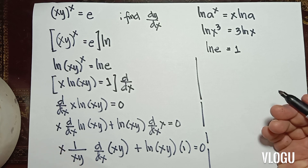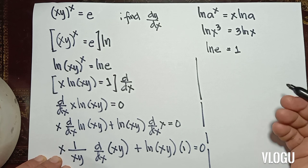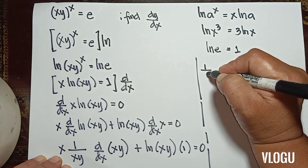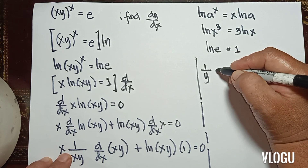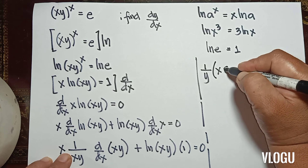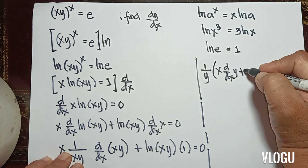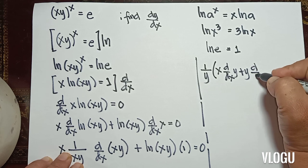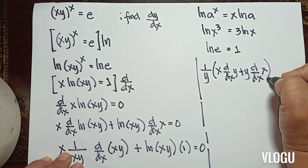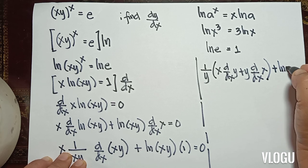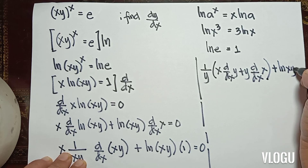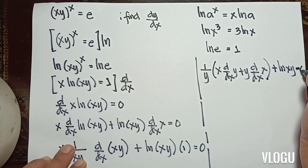The x cancels to give 1/y. This term is still a product, so we have (1/y) times [x · d/dx of y plus y · d/dx of x] plus ln(xy) equals 0.